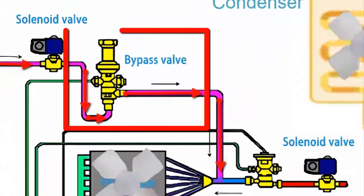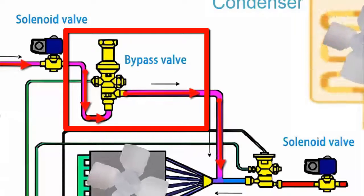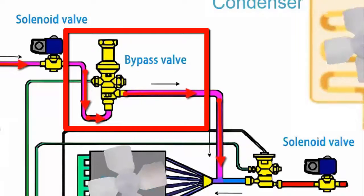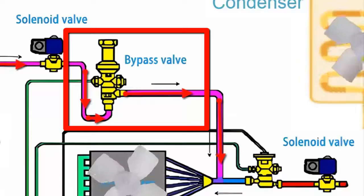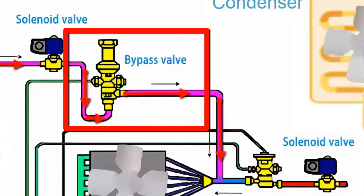Additionally, a control valve can be placed in the hot gas bypass to regulate the excessive supply of hot gas to the evaporator and prevent flooding.